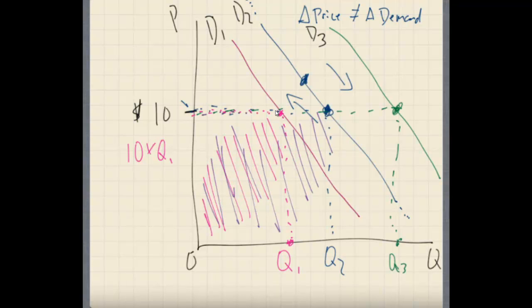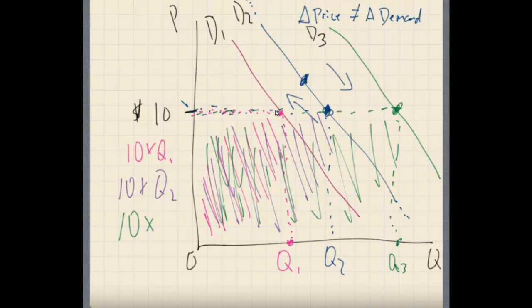Then for our blue, that's kind of blue, our kind of blue line, there's so many colors here. This is going to be 10 times Q2, right? And then for our green line, our last line, we have this here. This is 10 times Q3.